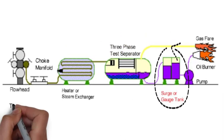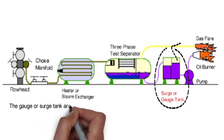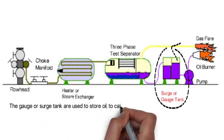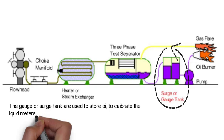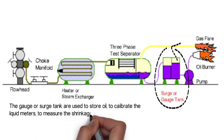The gauge or surge tank are used to store oil, to calibrate the liquid meters, to measure the shrinkage and low liquid flow rate.